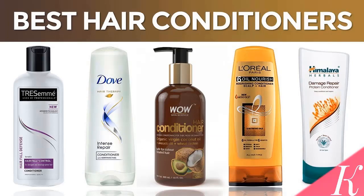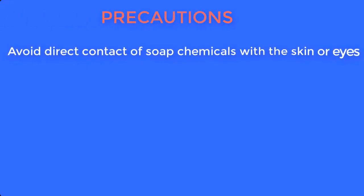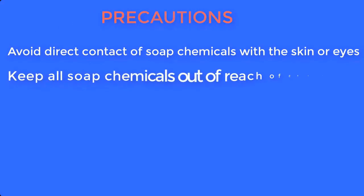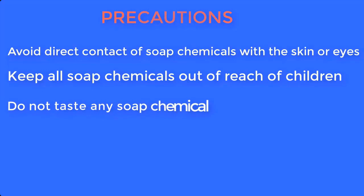Avoid direct contact of chemicals with the skin or eyes. Keep all chemicals out of reach of children and do not taste any chemical. Now let's go to the list of chemicals needed to produce hair conditioner.